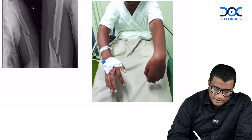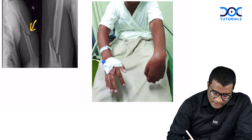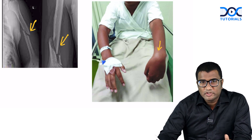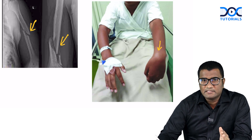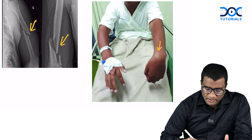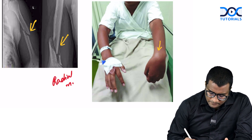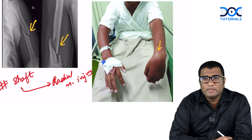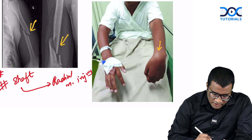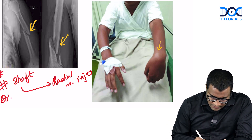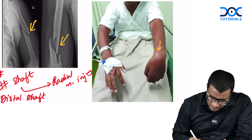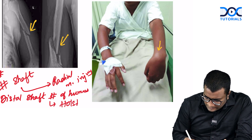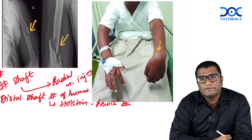Another question: a fracture of the shaft of the humerus was given, with the patient having wrist drop. Which nerve is damaged? A fracture shaft of humerus with wrist drop indicates radial nerve injury. The distal shaft fracture of the humerus — called Holstein-Lewis fracture — has a high incidence of radial nerve injury.